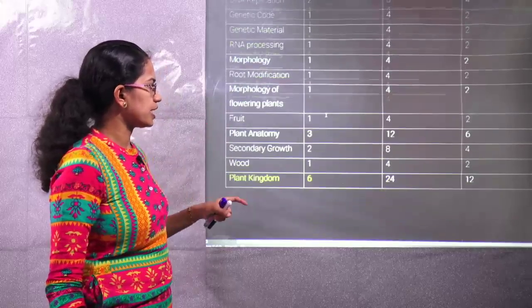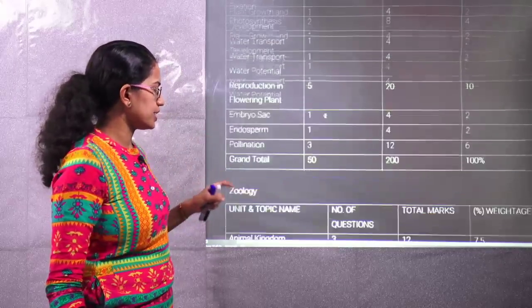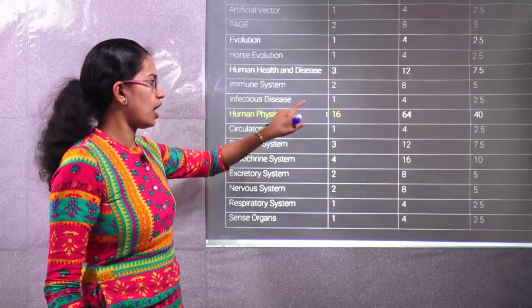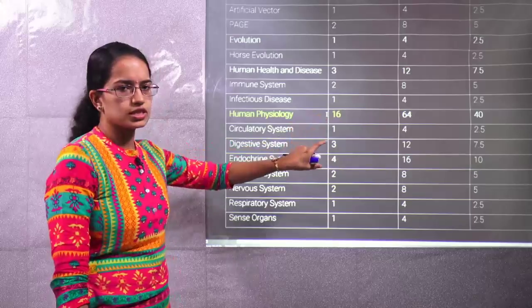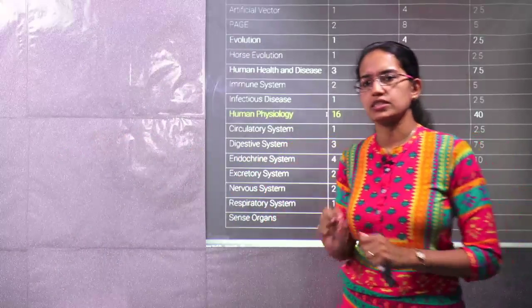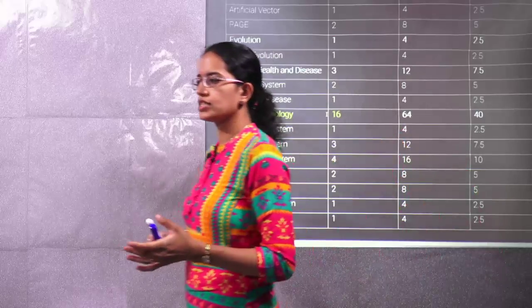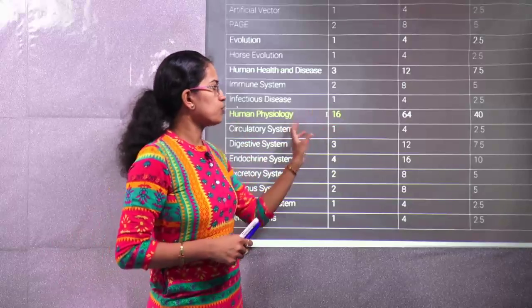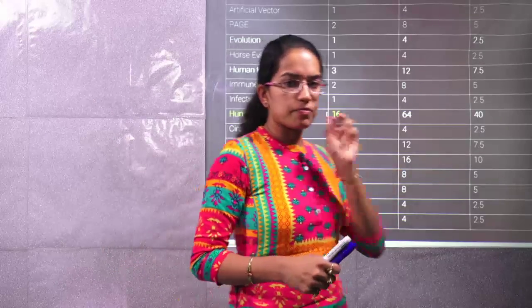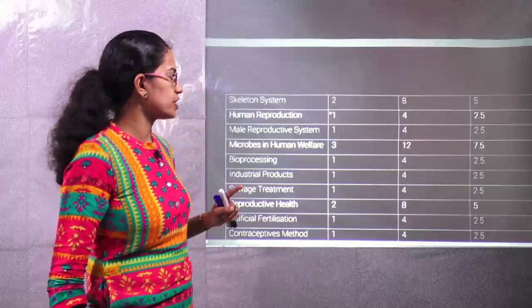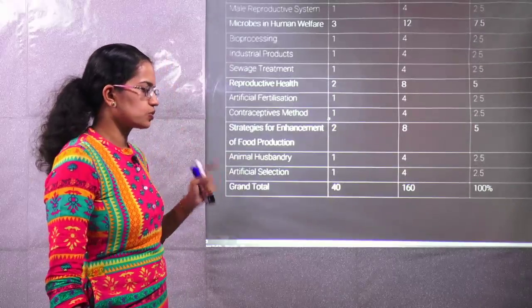When it comes to zoology, there is an exceptionally high focus on the physiology section. There are around 16 questions out of the total 40 questions usually asked from the zoology section. With 16 out of 40 questions coming from physiology, you can understand how much focus is given to it. Covering human physiology carefully is a very scoring avenue.